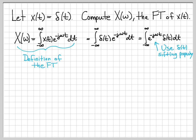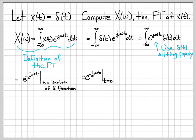The impulse function has a sifting property: if you integrate from minus infinity to infinity of some function times the impulse function, you can evaluate that integral very easily by evaluating the function at the location of the impulse. So here, we evaluate e to the minus j omega t at the location of delta of t, which is t equals 0. Substituting t equals 0 gives e to the 0, which equals 1.